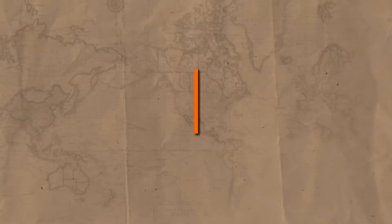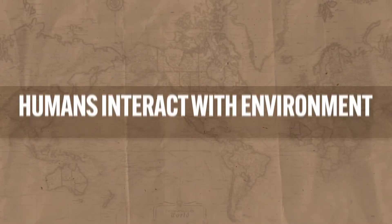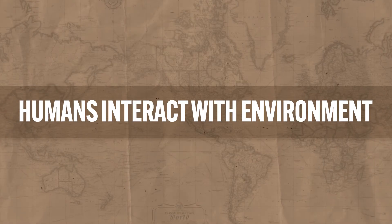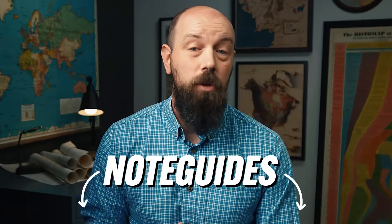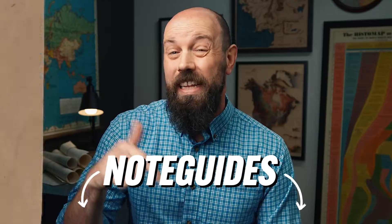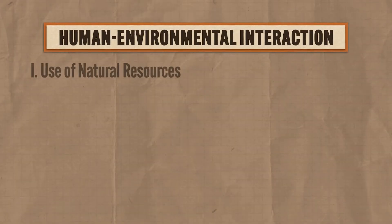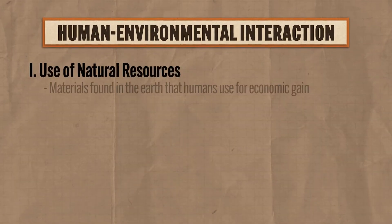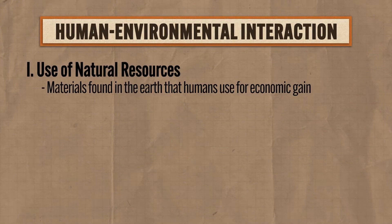So if you're ready to get them brain cows milked, let's get to it. There are three big categories of human-environmental interaction that geographers study, and you need to know all of them. If you want notes to follow along with this video and all my videos, check the link in the description. First is humans' use of natural resources, which are materials that are found on the earth that humans use for economic gain.